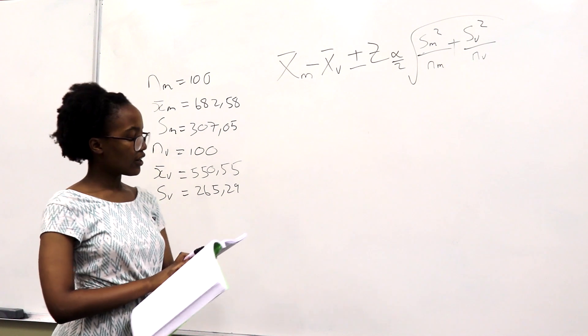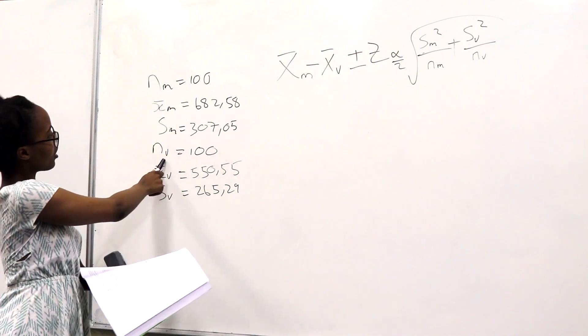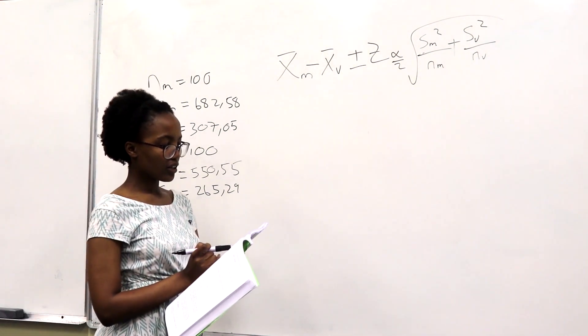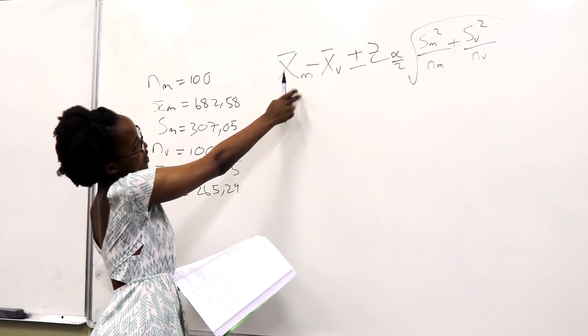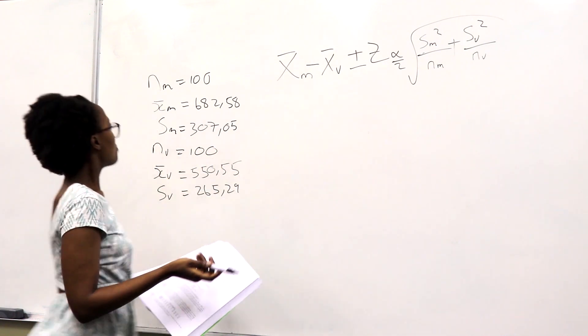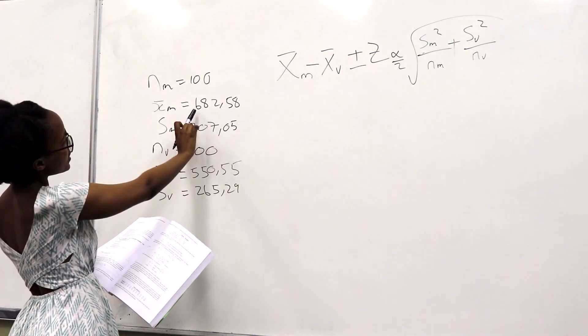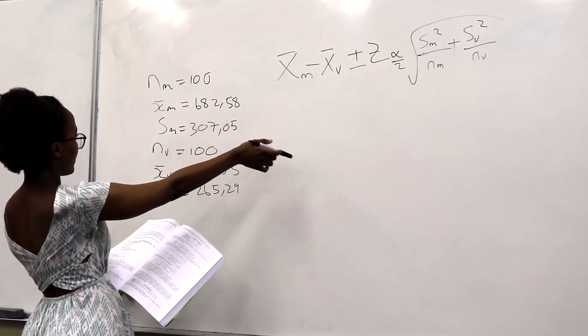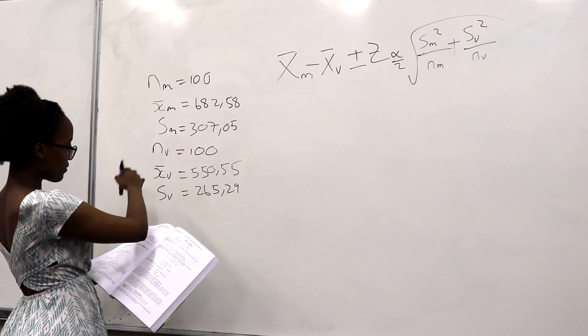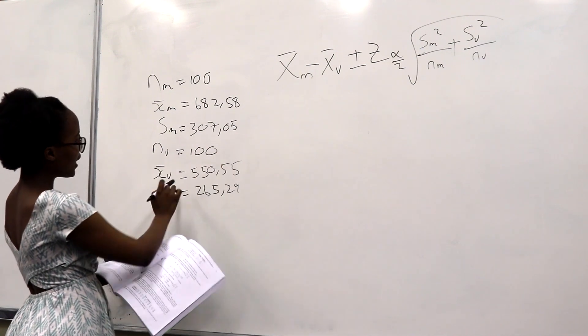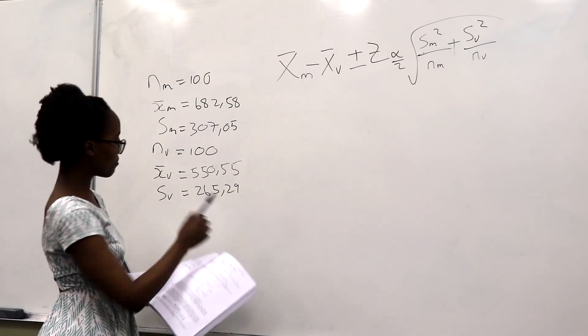In this scenario, we are given the sample which is 100 for both MasterCard and the Visa card. And if we can see that the information that follows is based on the samples, therefore we know that we use this equation for an unknown and unequal variance. So, for the MasterCard we have a sample of 100, a mean of 682.58, we have S of 307.05. And then for the Visa cards, we have a sample of 100 and a mean of 550.55 and then the standard deviation of 265.29.